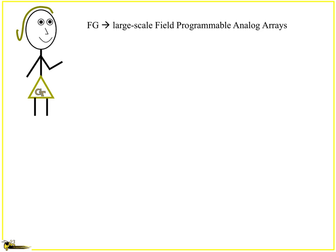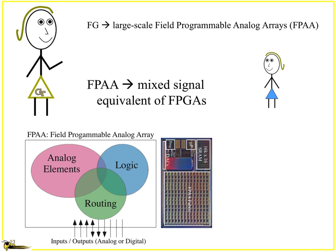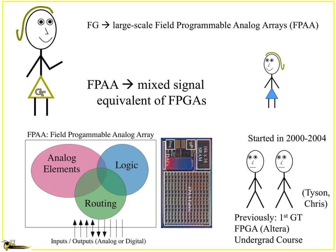So then we start talking about floating gate devices being used for large-scale field programmable analog arrays, or FPAs. I'm sure some people are going, I couldn't imagine this showing up in a conversation, but yeah it does. So we talk about floating gate elements, what we're really talking about is a mixed-signal equivalent of FPGAs where you have analog developments, logic, and routing all in one structure. Really kind of started by a couple of different students who were originally involved with creating the first FPGA course at Georgia Tech.